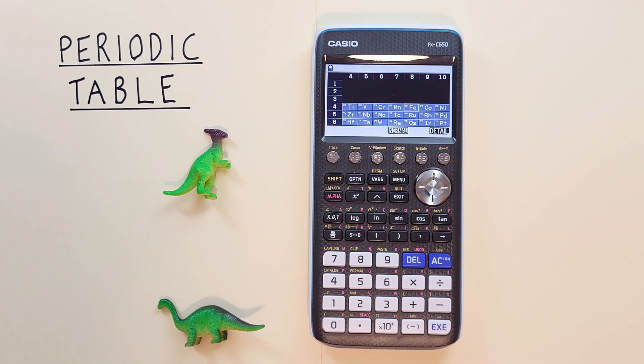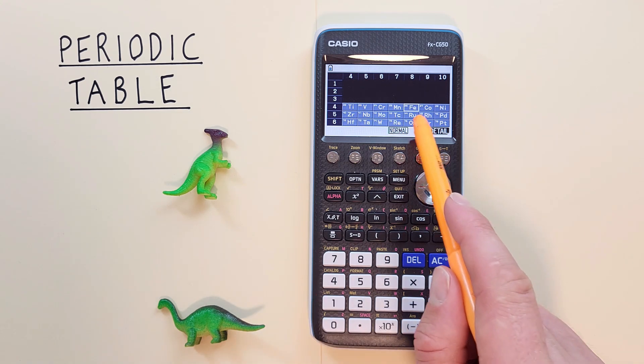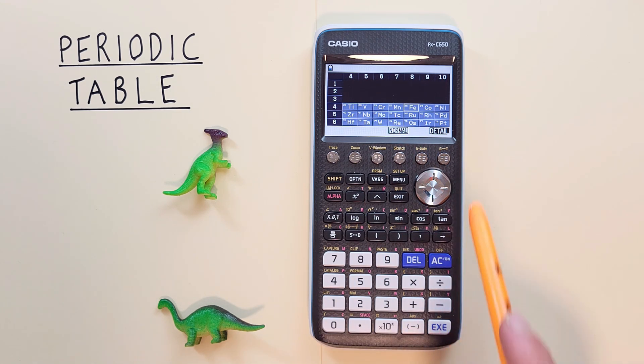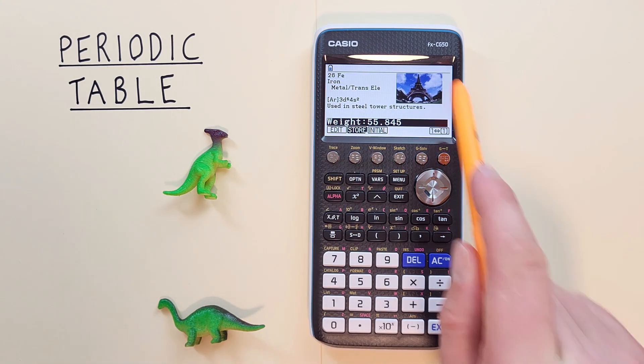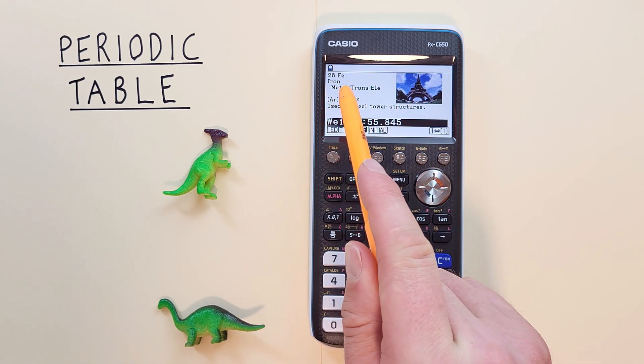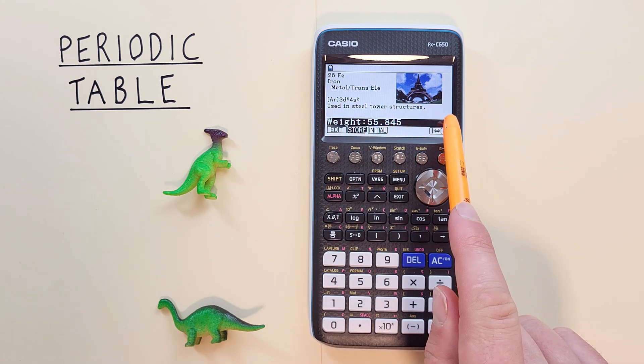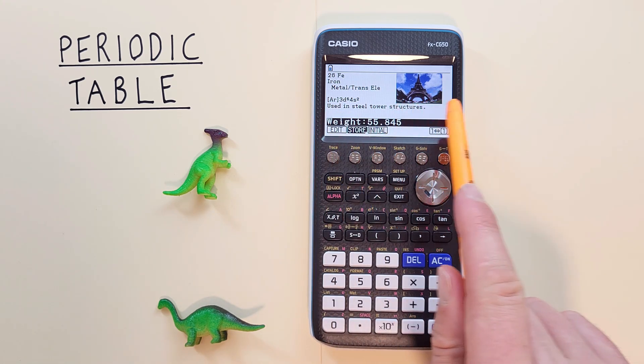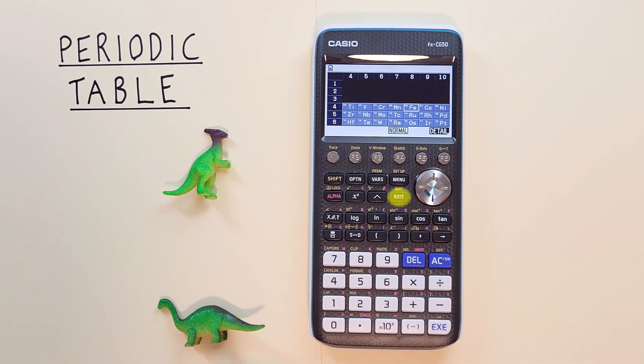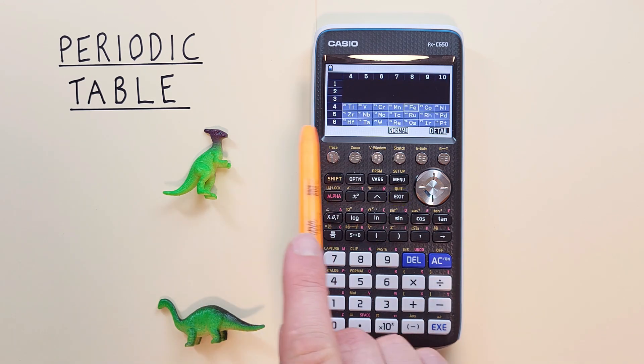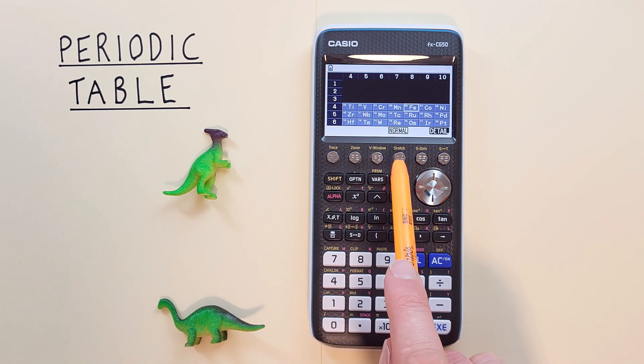And again, if we want more information, we can highlight one and hit either the EXE or the F6 detail. And there we go. This one's FE, iron. There's our fun fact, our weight, and our picture. To go back again, we hit the EXIT. And if we want to go back to the zoomed out normal screen, we can hit F4 or normal.